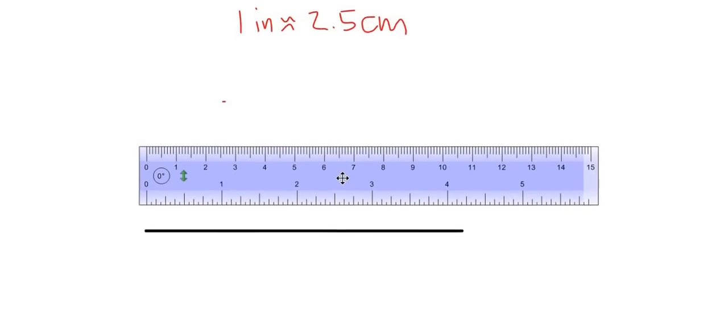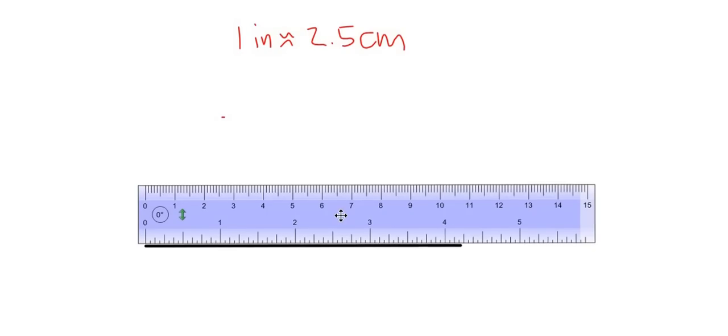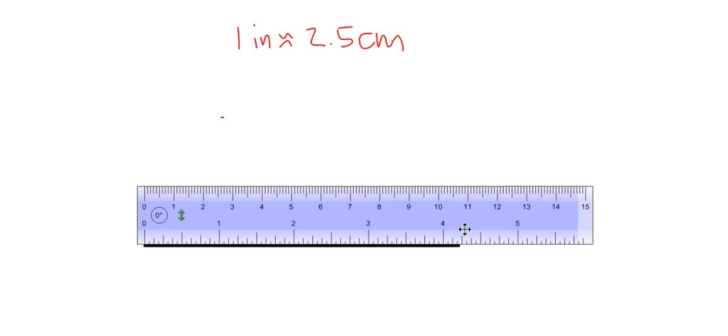I'm going to bring this down and I'm going to line up the 0. So just like when we were doing it with the metric side, I'm going to line up the 0 with one end of the line segment. And I'm going to count. What do I have? I have 1, 2, 3, 4 and a bit. 4 and a bit inches. So I know I have 4 inches.